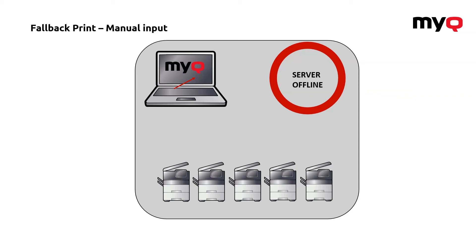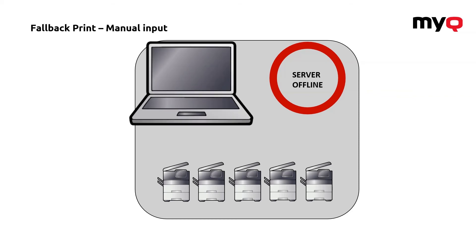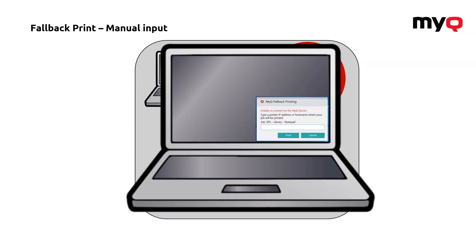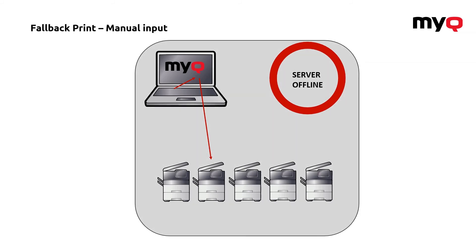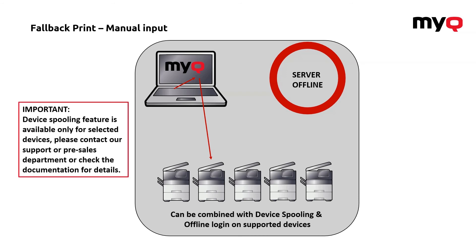A similar option allows the application to pop up and ask you to provide the hostname or IP address of the machine. This might not be ideal for a common user, but it can be handy for an IT admin. Based on the selected machine, the job is released. Like the previous options, this can also be combined with device pooling and offline login.